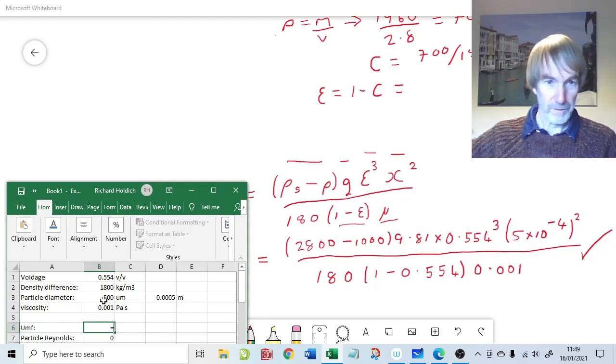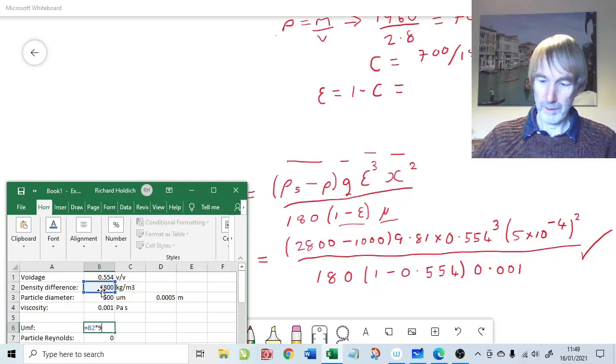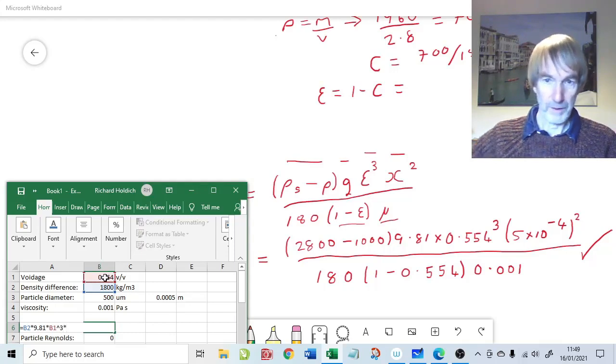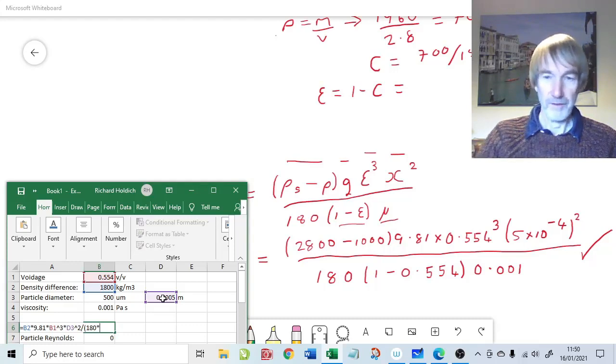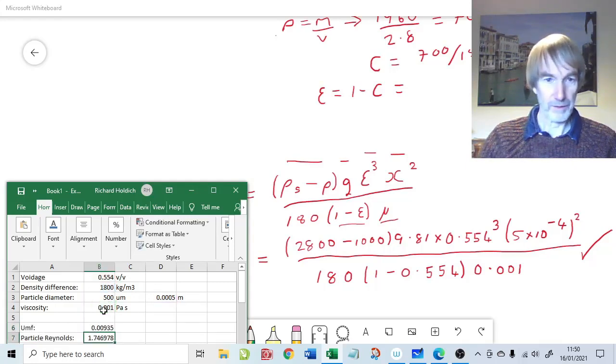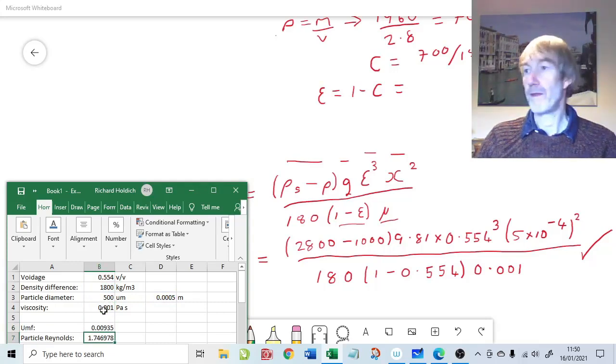We want the density difference times by 9.81, times by the voidage cubed, times by the particle diameter in SI units squared. Now we need to divide by quite a lot. Divide by 180, that's assuming the Cousini constant of 5 is accurate, times by 1 minus the voidage, times by the viscosity. And then put the brackets at the end to close that off. And we have a minimum fluidizing velocity of 0.00935.